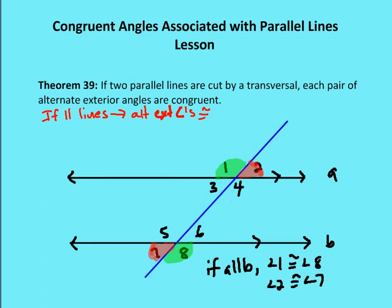Theorem 39 says that if two parallel lines are cut by a transversal, each pair of alternate exterior angles are congruent. Alternate exterior angles are exterior to the parallel lines, on opposite sides of the transversal, and they don't share the same vertex. So angles one and eight are alternate exterior angles, and angles two and seven are alternate exterior angles. If I have two parallel lines, then those two angles will be congruent.